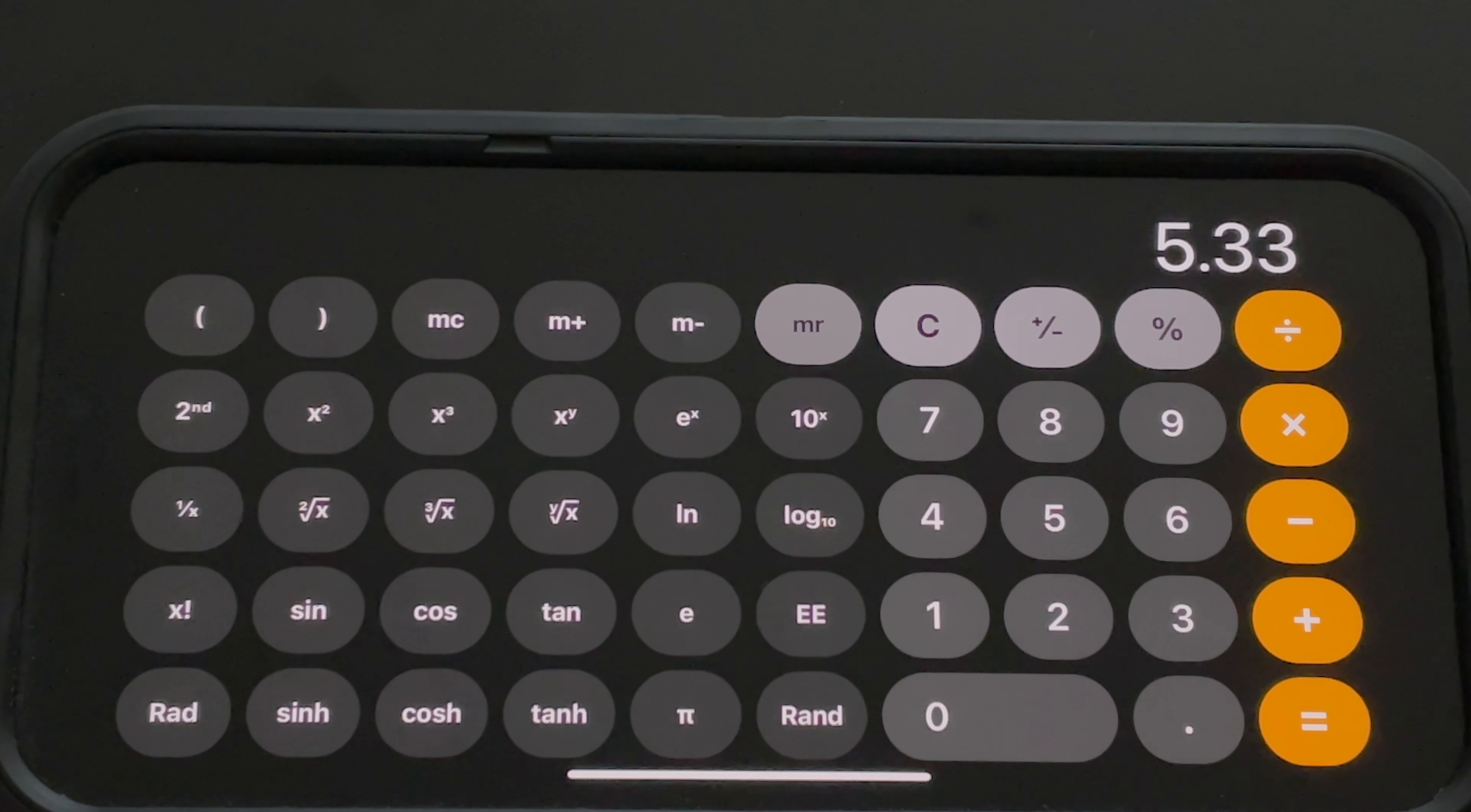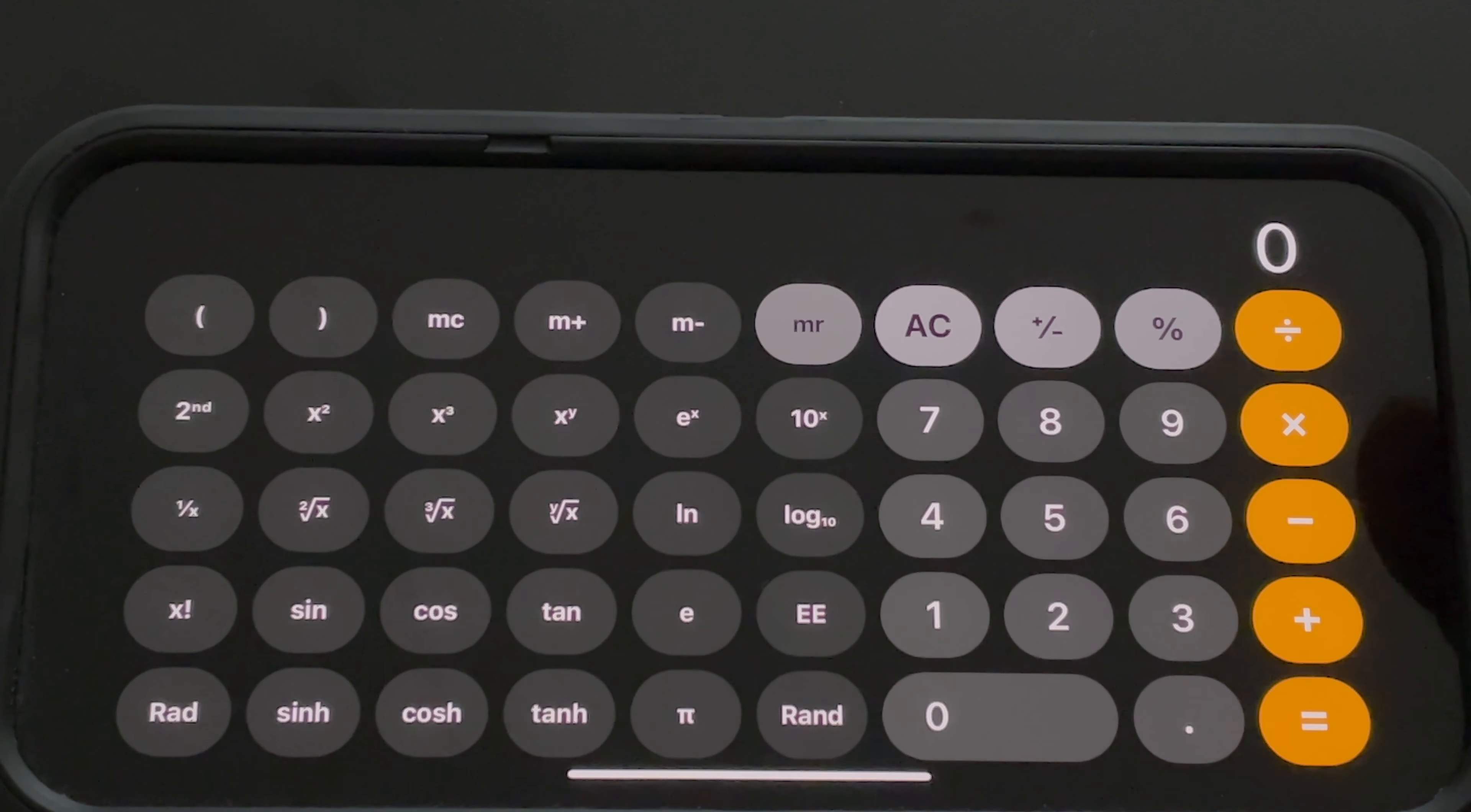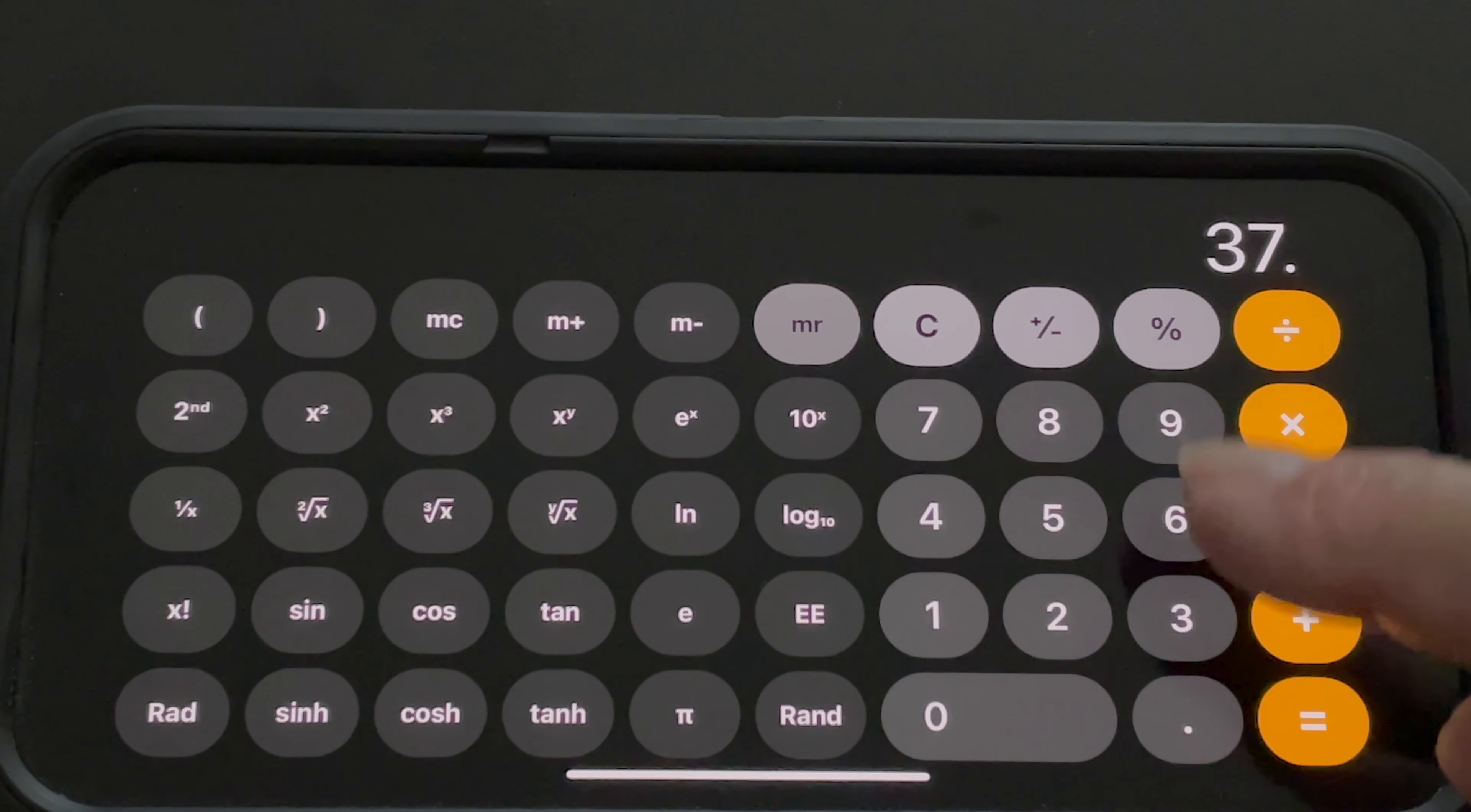I'm going to clear that. Our three measurements outside, I usually do three at least, of the angle. I got 37, 37, 38. Average those together, and it's 37.33.